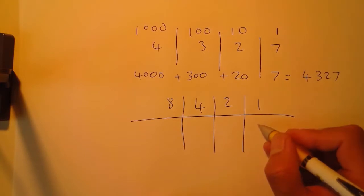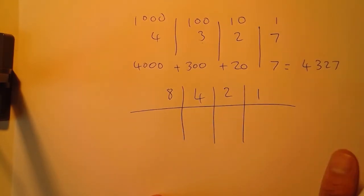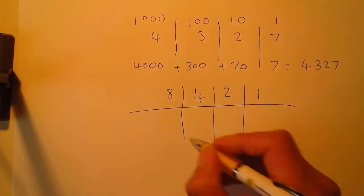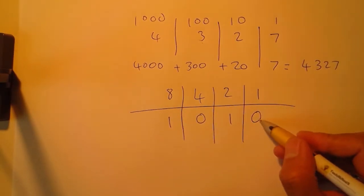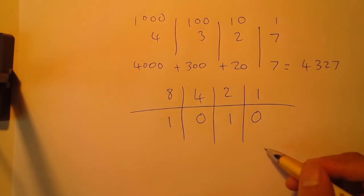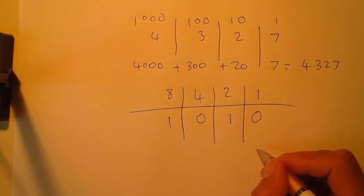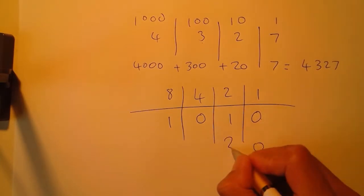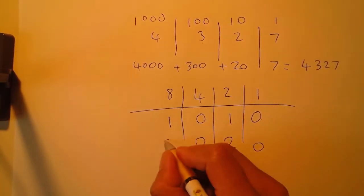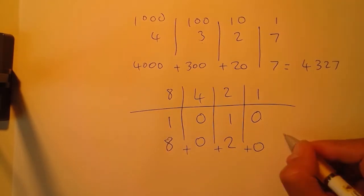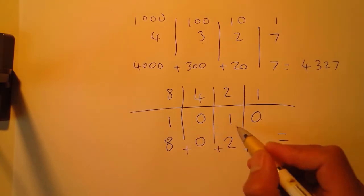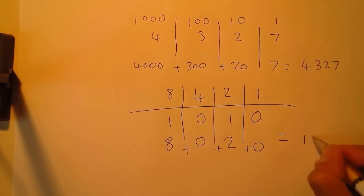Now if we take our numbers, bearing in mind that in binary there are only two states, we can only ever have one or zero and we multiply in exactly the same way. One times zero is zero, one times two is two, four times zero is zero, and one times eight is eight. You add them all together: eight plus zero plus two plus zero. So we understand that 1010 in binary is actually the denary equivalent to ten.